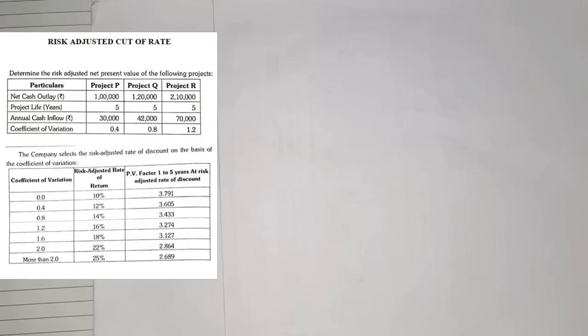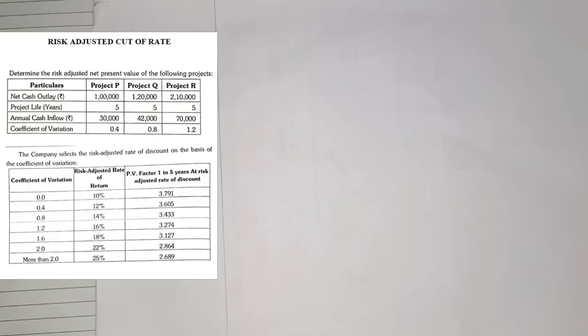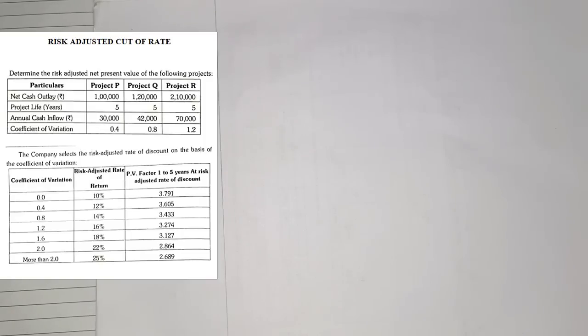The very first type of sum is based on risk adjusted cut-off rate. The question asks us to determine the risk adjusted net present value of three projects P, Q, and R. The net cash outlay is given as 1 lakh, 1 lakh 20, and 2 lakh 10. Project life is five years, annual inflows are 30,000, 42,000, and 70,000, and the coefficient of variation is 0.4, 0.8, and 1.2.